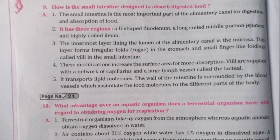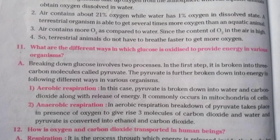What advantage over an aquatic organism does a terrestrial organism have with regard to obtaining oxygen for respiration? Terrestrial organisms take up oxygen from the atmosphere, whereas aquatic animals obtain oxygen dissolved in water. Air contains about 21% oxygen while water has only 1% oxygen in dissolved state, so a terrestrial organism is able to get several times more oxygen than an aquatic animal. Since the content of O2 in the air is high, terrestrial animals do not have to breathe faster to get more oxygen.